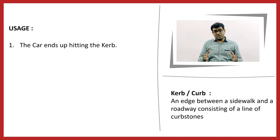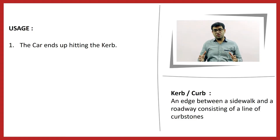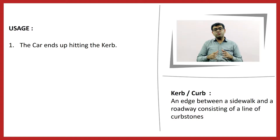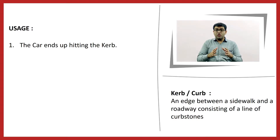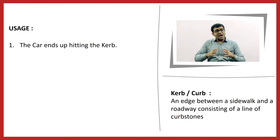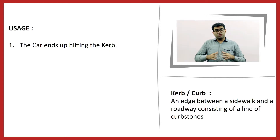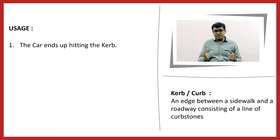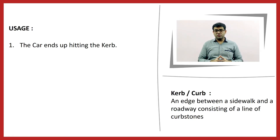Now the word curb is either spelled as K-E-R-B or C-U-R-B. Curb with a K is British while curb with a C is American. Now as far as the usage is concerned, what we saw in the clipping — can we describe it by saying the car ends up hitting the curb.